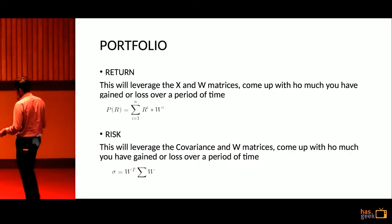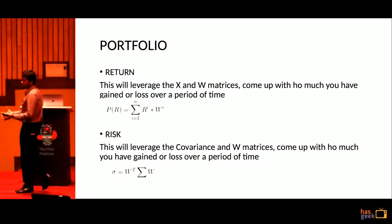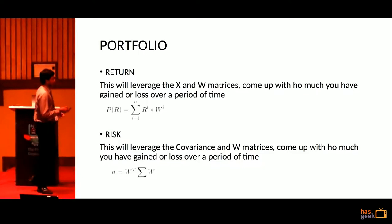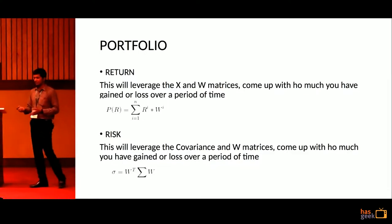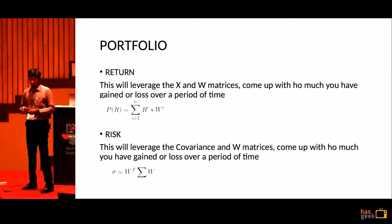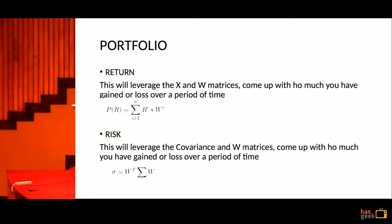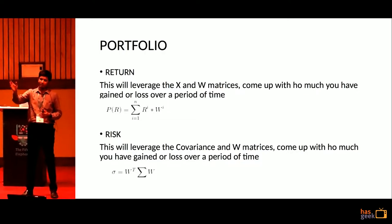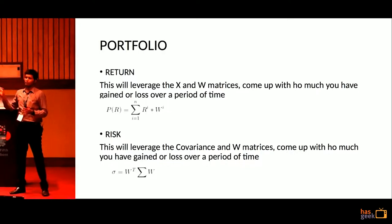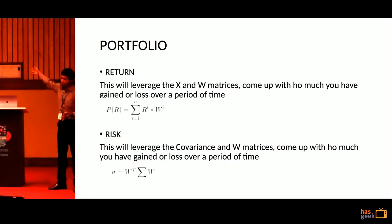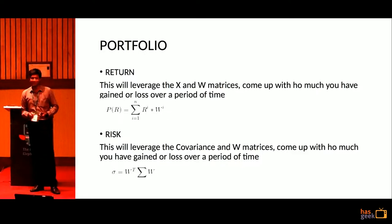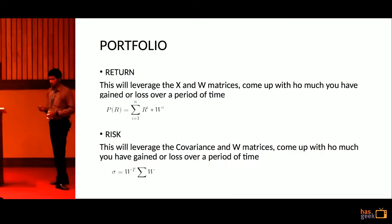As with any problem we are trying to solve, we need metrics. How do we evaluate if a portfolio is good or bad? We have two simple metrics. One is return — the portfolio should give me profits. The second is risk. In financial parlance, risk is nothing but the deviation from what we expect, and the expectation is nothing but the mean. A stock that deviates a lot from the mean is risky — we don't know how far it will be from expectations. We want a stock that remains stable, like government entities.